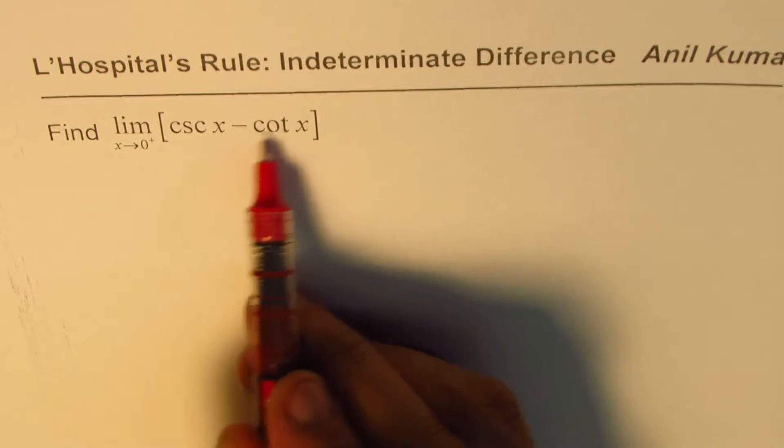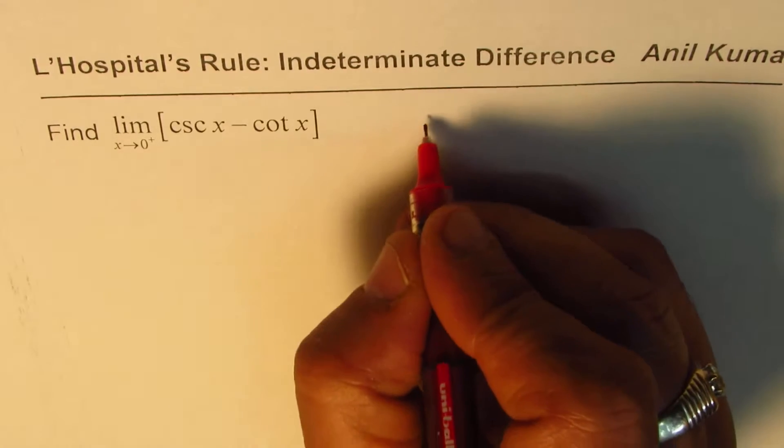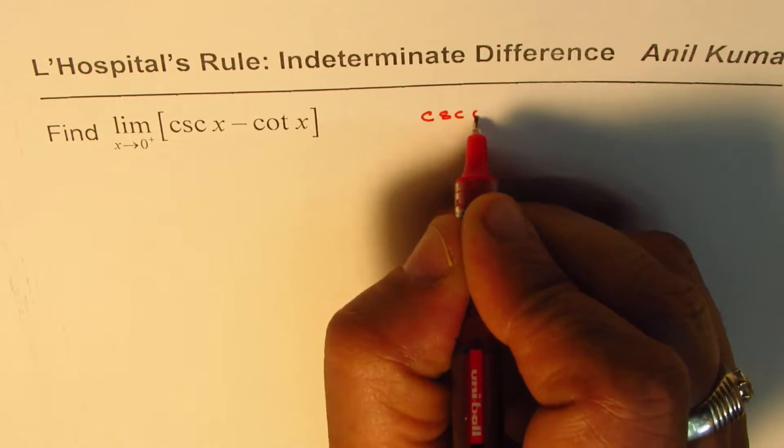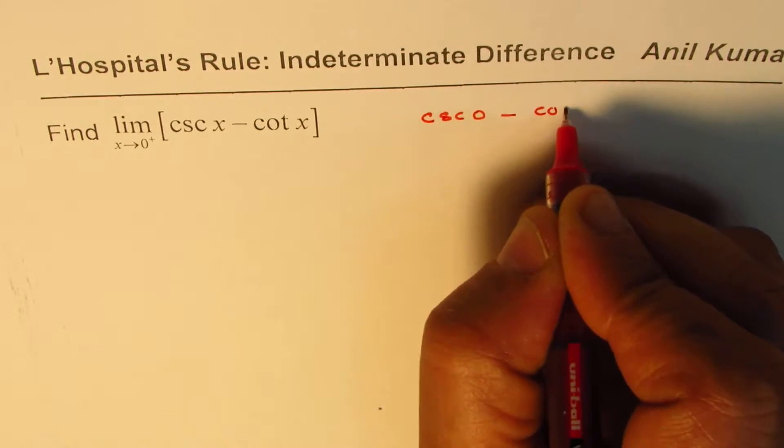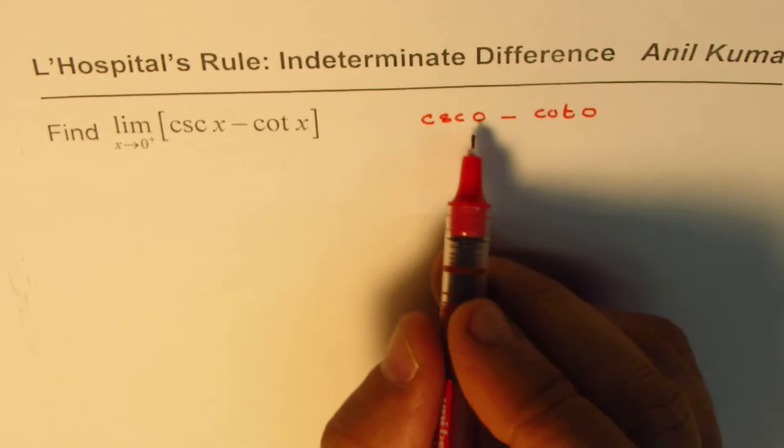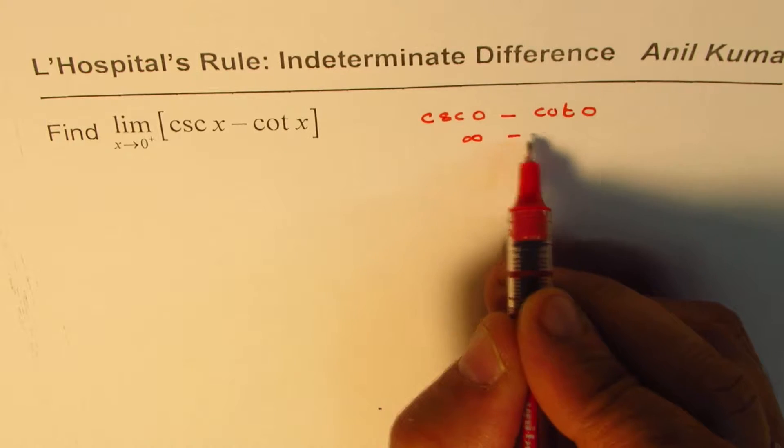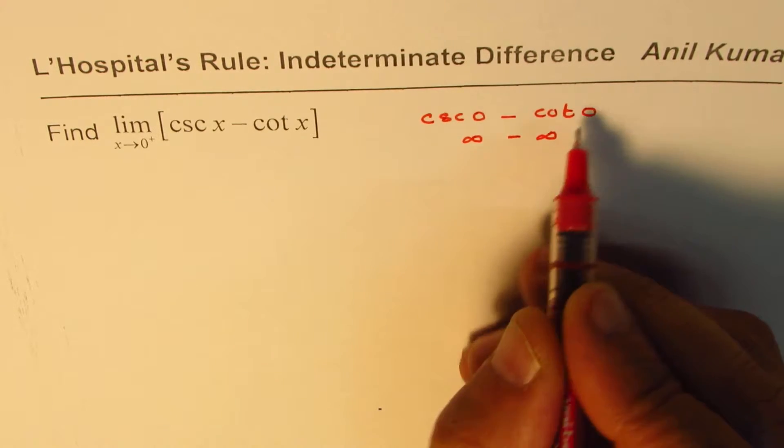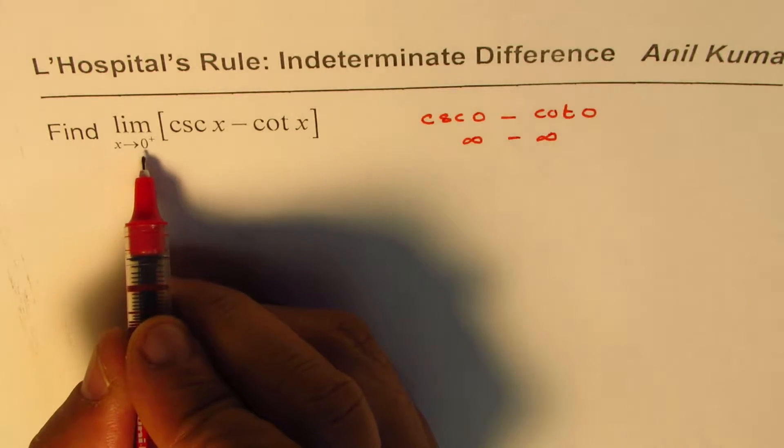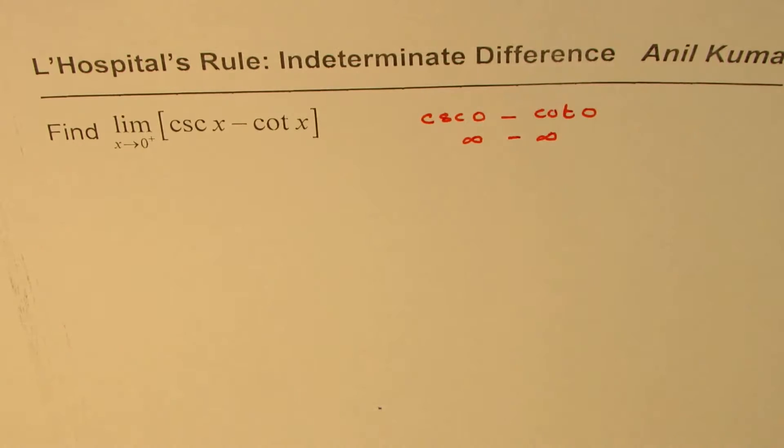If I replace x with 0, what do I get? I get cosecant 0 minus cotangent 0. Now cosecant 0 is infinity and cotangent 0 is also infinity. They are positive infinity when 0 is being approached from the right side.